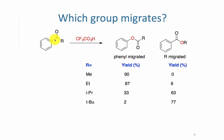If you look at the top left of slide 4, we see a phenyl group on the left-hand side of the ketone, and then various R groups, which could be methyl, ethyl, isopropyl, and tert-butyl.